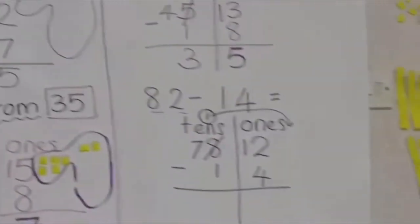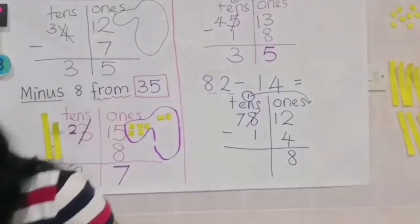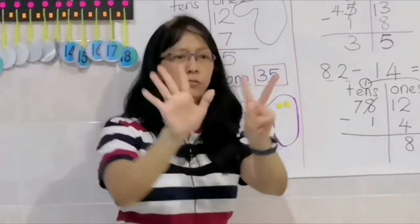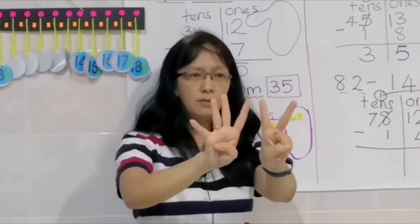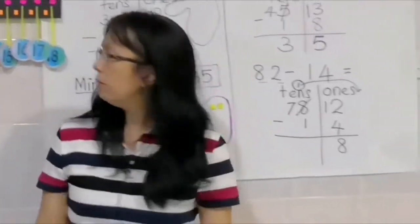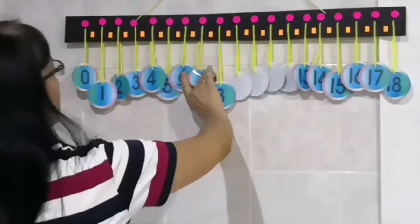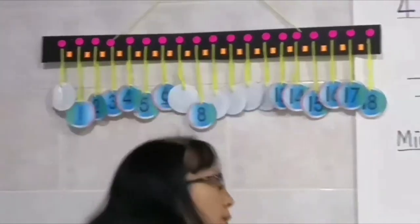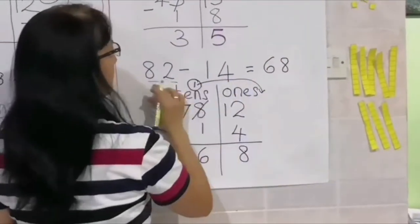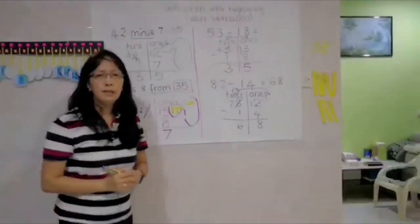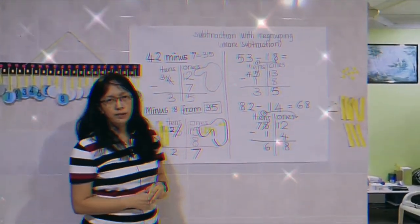12 take away 4: 1, 2, 3, 4 — the answer left is 8. Then 7 minus 1: you can use your fingers — 7 minus 1 equals 6. Or use the number line: 7 take away 1, the answer is 6. We write 6 in the tens column and 8 in the ones column. So 82 minus 14 equals 68. That's all for today. Teacher hopes you can understand how to subtract with regrouping. Thank you.